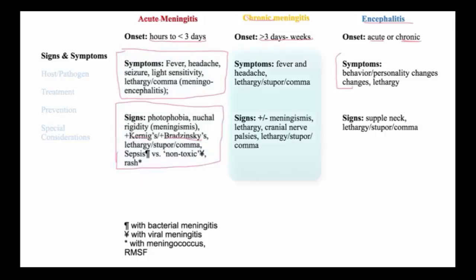Chronic meningitis similarly will have fever and headache, but meningismus may or may not be present. Changes in mental status are variable as well. They may have cranial nerve palsies, unlike with bacterial meningitis. In the case of encephalitis, they present typically with behavioral changes — a personality change or lethargy or coma — that progresses over hours or days. Oftentimes there will be no signs of meningitis, with a supple neck.